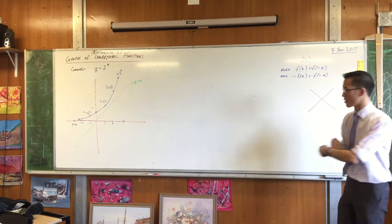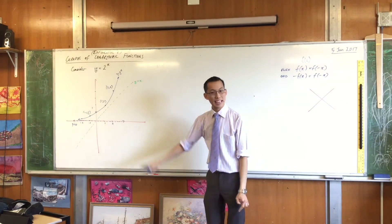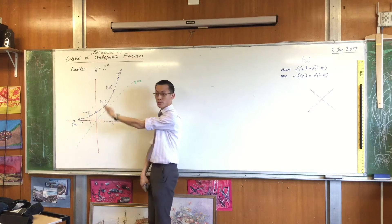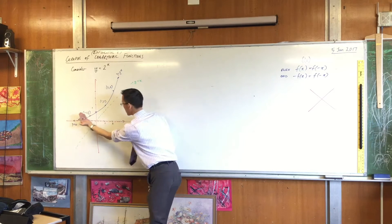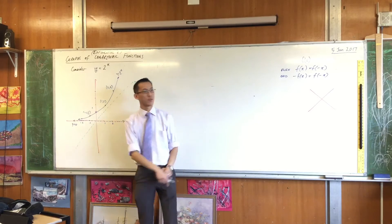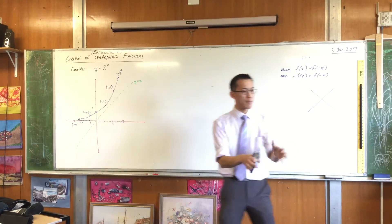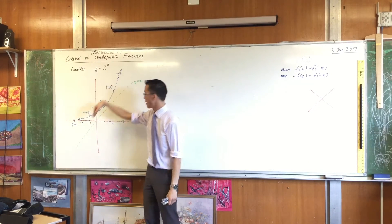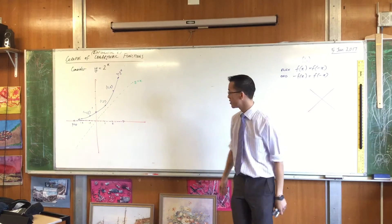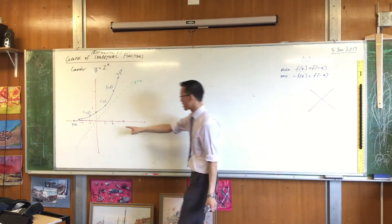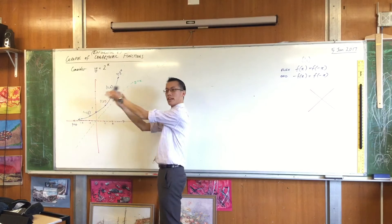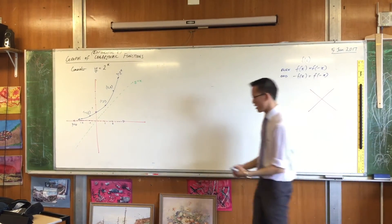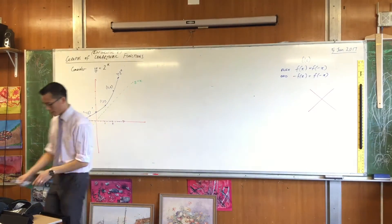Keeping your page the way it is, I want you to reflect the y equals 2 to the x curve across the y equals x line we've just drawn. If you've got a free page, you can literally fold your page along that line, and if you press hard enough on the opposite side, you'll get an impression — that impression is the reflection across y equals x. That gives you a new graph. Once you've got it, put your pen down and look up so I know you're ready.